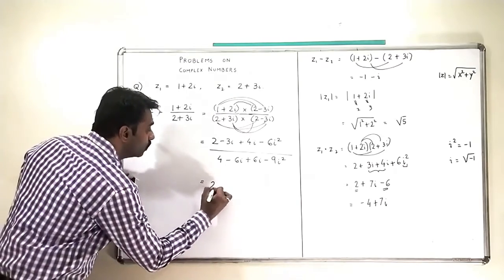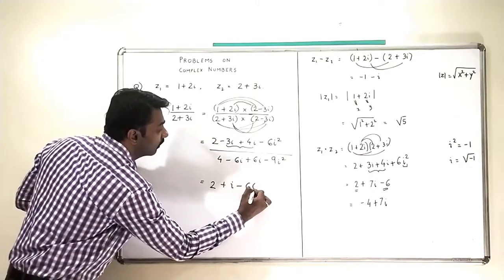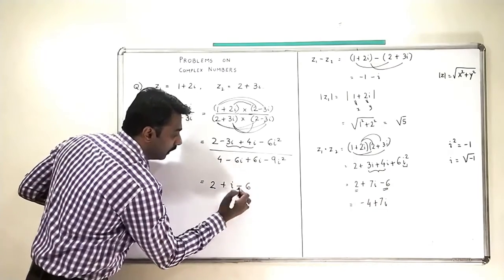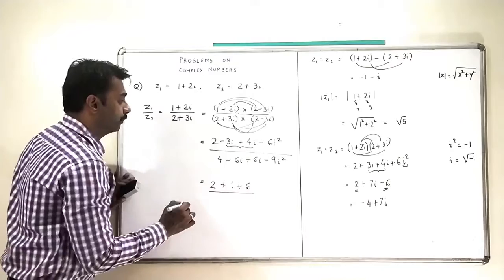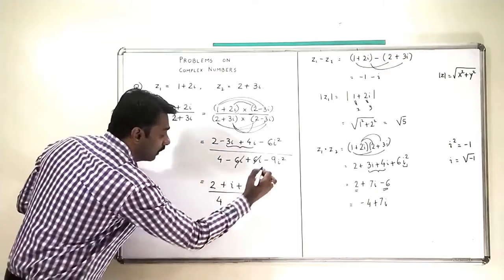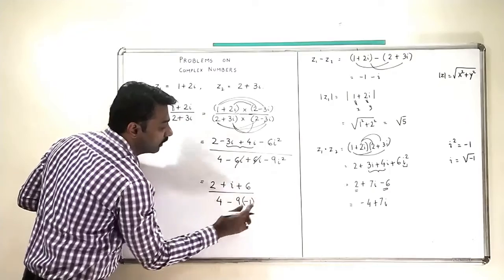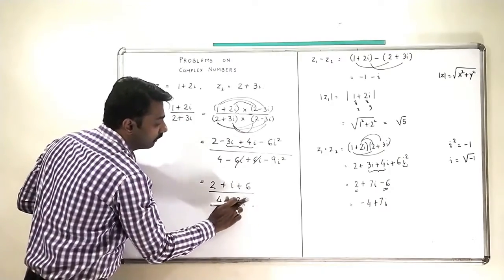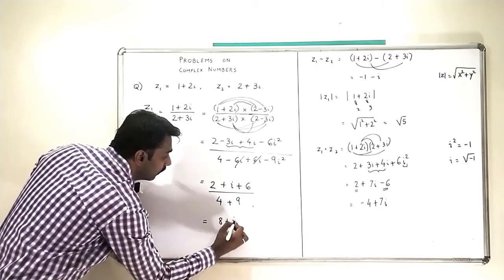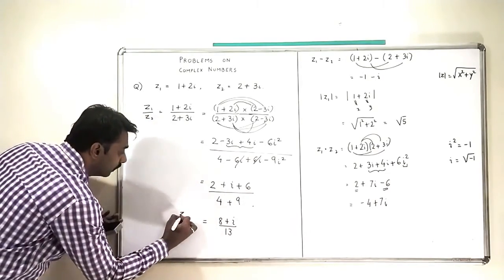Again, I know that i squared is equal to minus 1. So this will become 2 plus i, and minus 6 times minus 1 gives plus 6, divided by — the 6i and minus 6i cancel — and I will have 4 minus 9 times i squared. But i squared is minus 1, so this minus 1 becomes plus 1, giving 4 plus 9 equals 13.